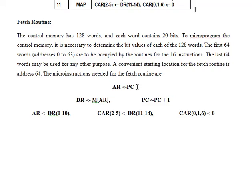The address from the program counter was transferred to the Address Register (AR). Then at T1 we had to increment the PC for the next instruction. We then read from memory using the PC address, and the result was loaded into the Instruction Register (IR). I took this directly from the book, so the label shown is actually IR — you can note that correction.